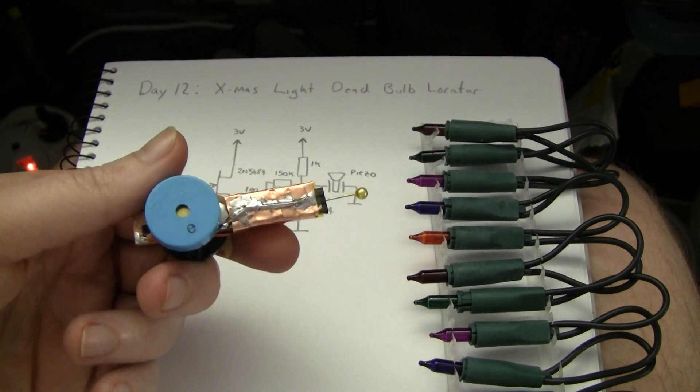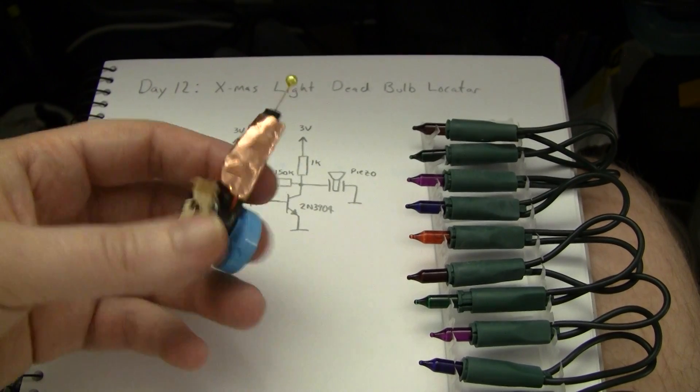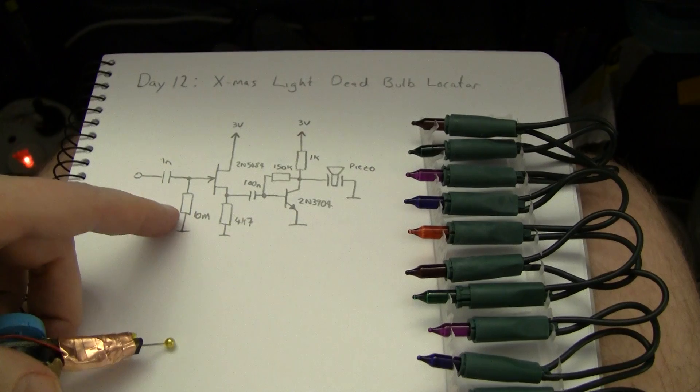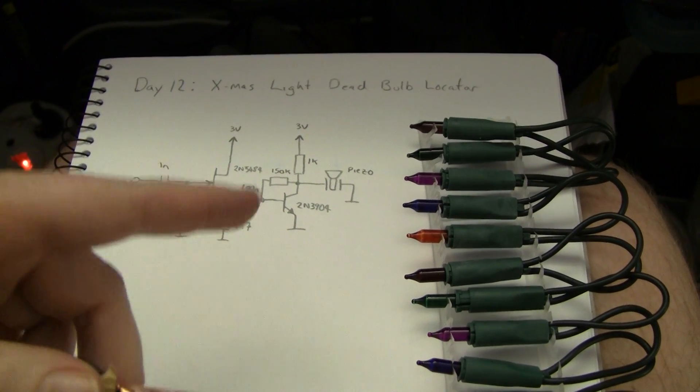So it's basically an electric field to sound converter with a very high input impedance. This is a 10 mega resistor so it probably doesn't need to be that high but it works quite well.